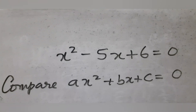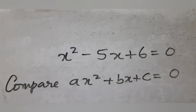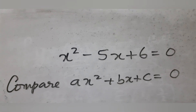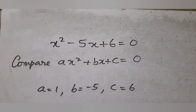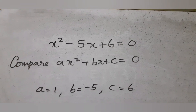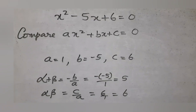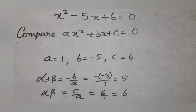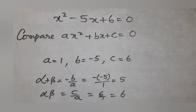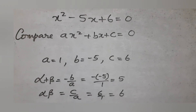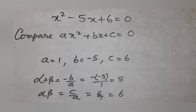Start by comparing the given equation with ax² + bx + c, so a = 1, b = -5, and c = 6. Now use the formula for α + β and αβ: α + β = -b/a, which gives you 5, and αβ = c/a.